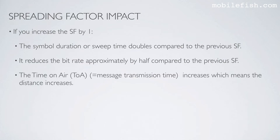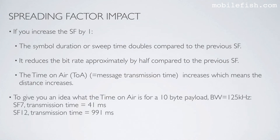The time on air, meaning the message transmission time, increases, which means the distance increases. To give you an idea what the time on air is for a 10-byte payload, let's take bandwidth is 125 kHz. If the spreading factor is 7, the transmission time is 41 ms. But if the spreading factor is 12, the transmission time is 991 ms.